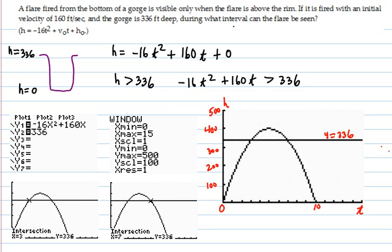A flare is fired from the bottom of the gorge. Here is this guy stranded down here and he shoots up this flare. And it can only be seen when it is over here at 336 feet up from the bottom. We are calling h equals zero at the bottom and 336 at the top of the gorge.